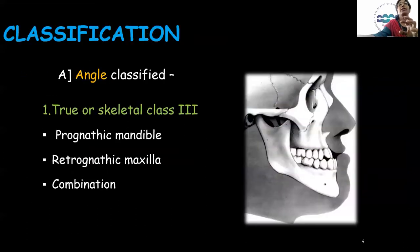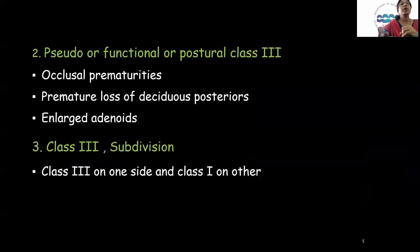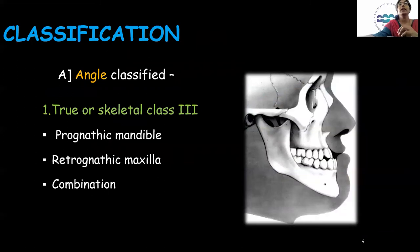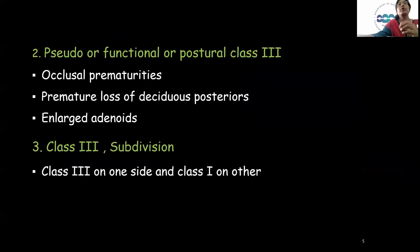Angle classified Class 3 malocclusion into a true or skeletal Class 3, a pseudo Class 3, and Class 3 subdivision. In a true or skeletal Class 3, the features include a prognathic mandible, a retrognathic maxilla, or a combination of both. In pseudo or functional Class 3, it usually occurs due to occlusal prematurities, premature loss of the deciduous posterior teeth, or enlarged adenoids. In Class 3 subdivision, there is a Class 3 molar relation on one side and Class 1 on the other.